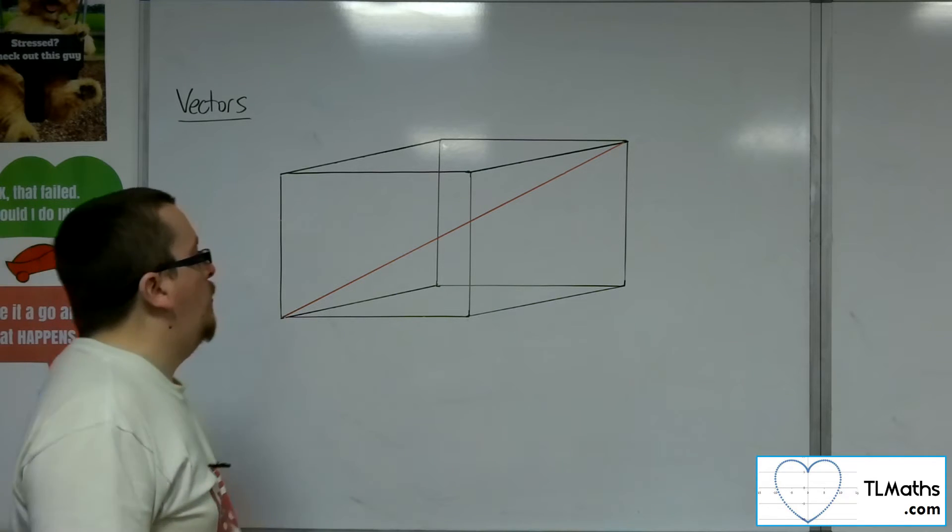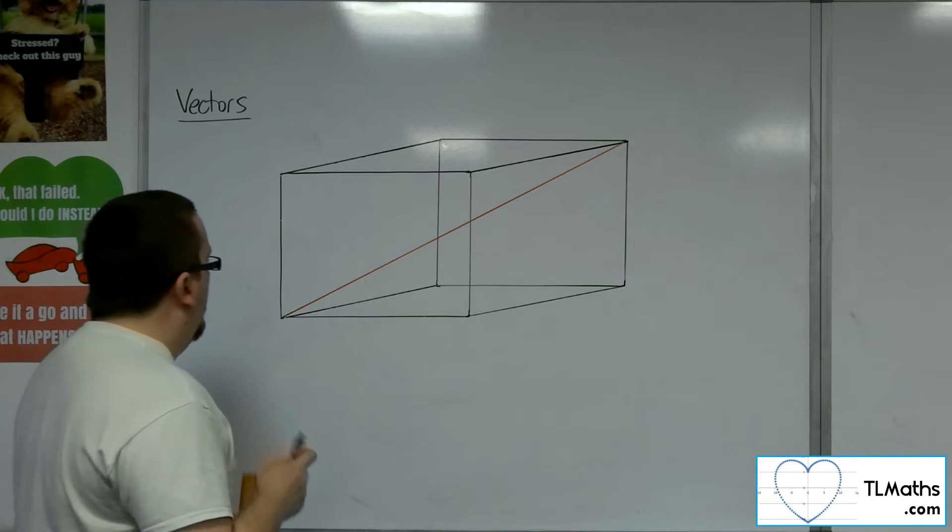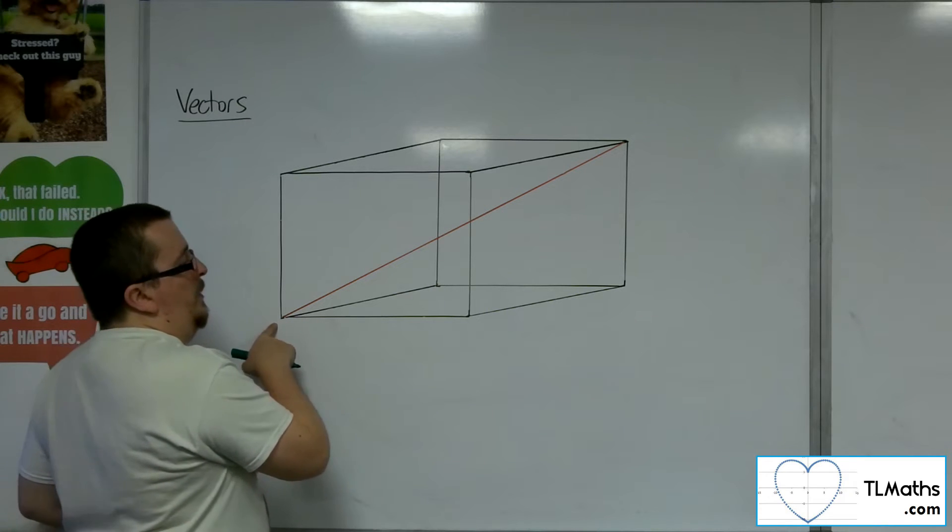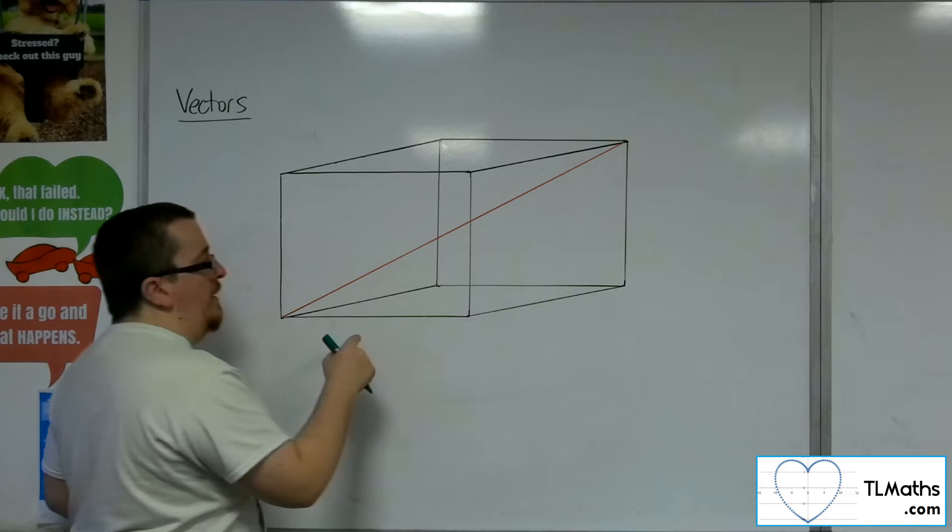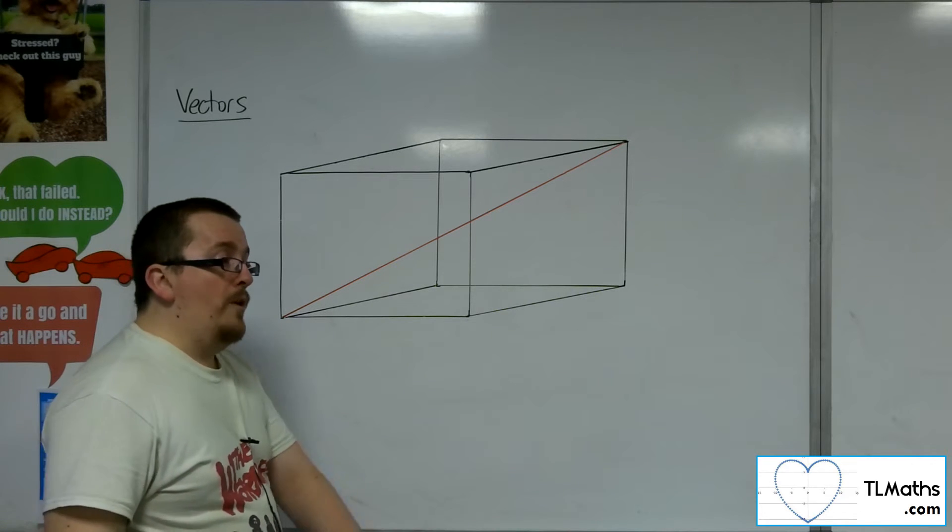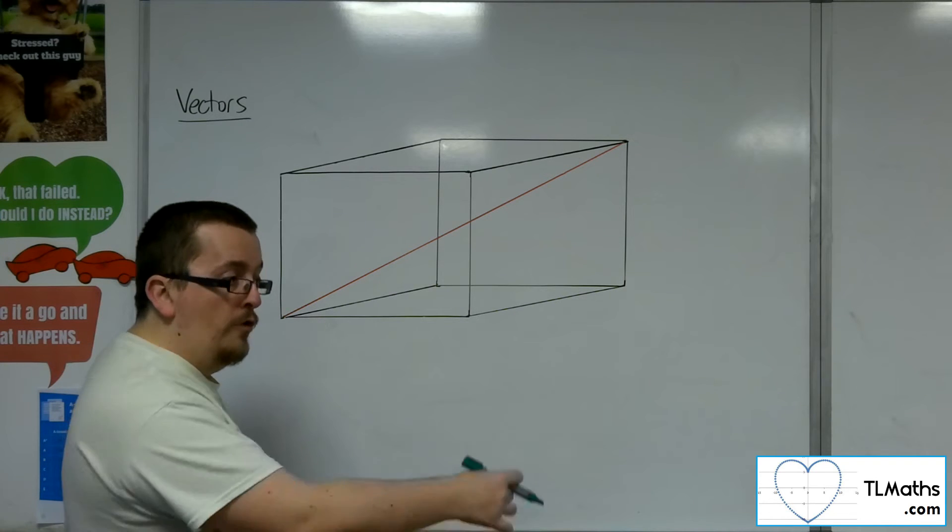Now what I'm going to do is I'm going to draw a line from that same corner to that corner. So it's kind of like the floor, imagining the floor of the room, and you're drawing a line from one corner of the room to the other corner of the room along the floor.